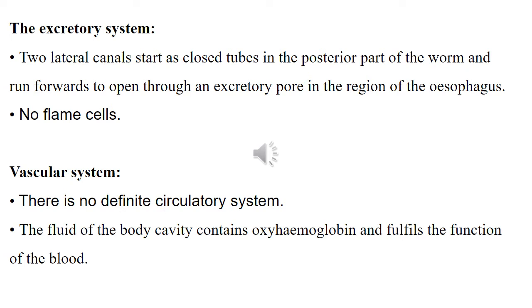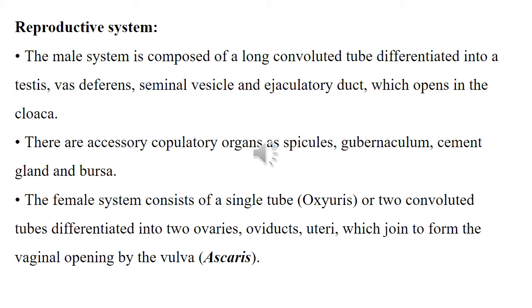Vascular system: there is no definite circulatory system. The fluid of the body cavity contains oxyhemoglobin and fulfills the function of blood. Reproductive system: the male system is composed of a long convoluted tube differentiated into a testis, vas deferens, seminal vesicle and ejaculatory duct, which opens in the cloaca. There are accessory copulatory organs: spicules, gubernaculum, cement gland, and bursa. The female system consists of a single tube, as in Oxyuris, or two convoluted tubes differentiated into two ovaries, two oviducts, and uterus, which join to form the vagina opening by the vulva, as in Ascaris.